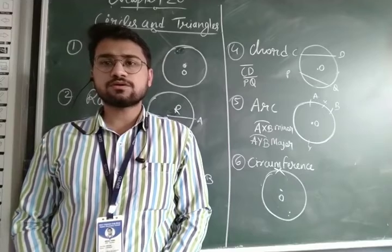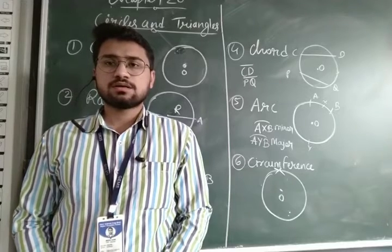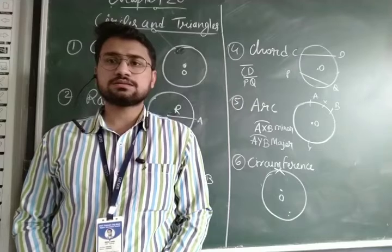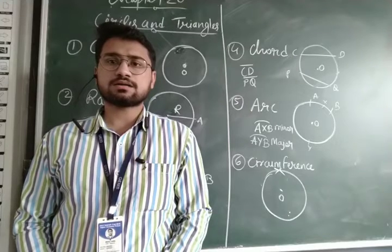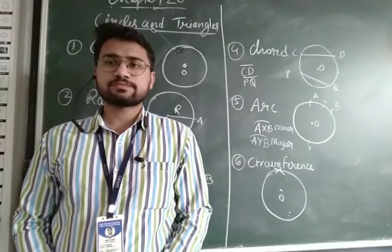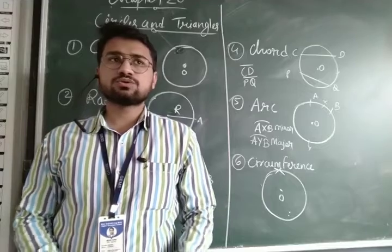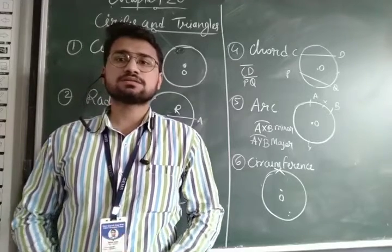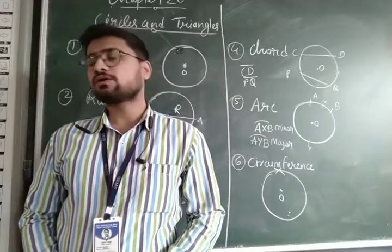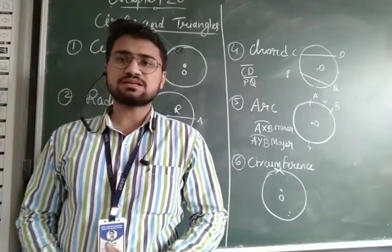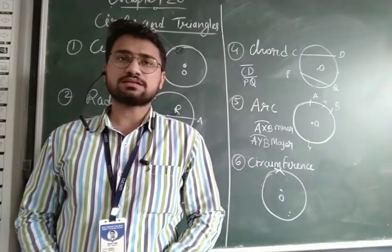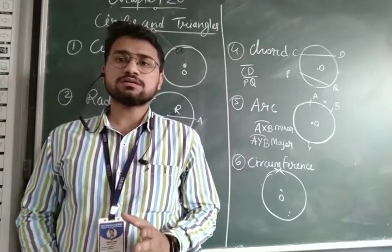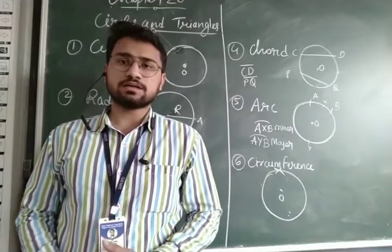First of all we will go through the circle and what are its elements like radius, diameter, arc, etc. And then we will go through the different types such as concentric circle, semicircle, etc. And then we will learn how to construct a circle with a given radius.